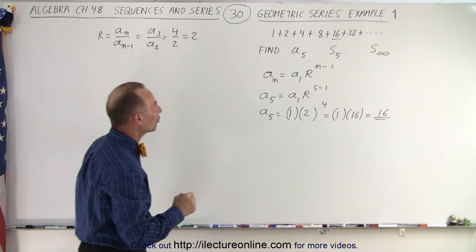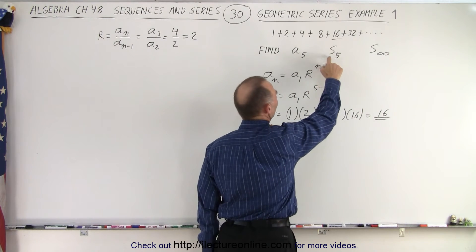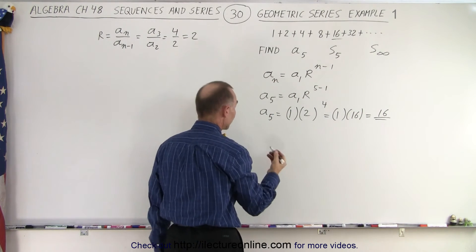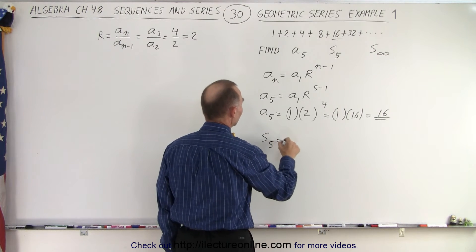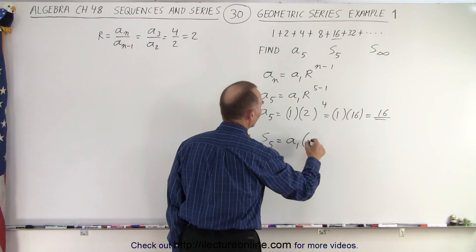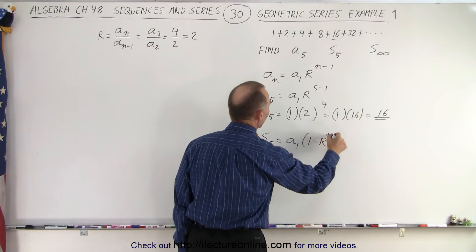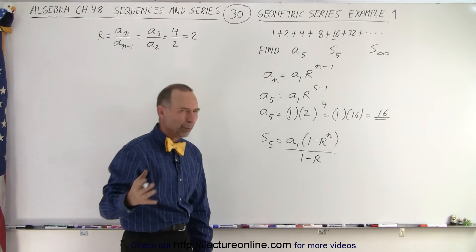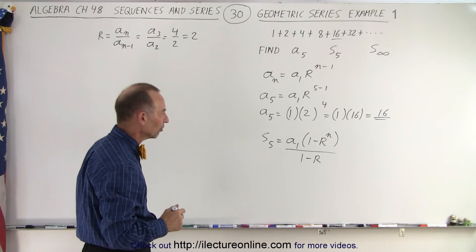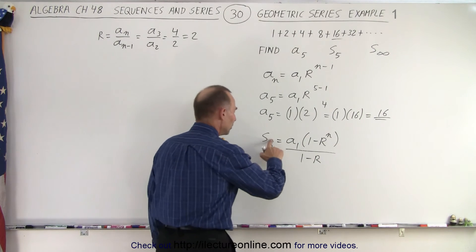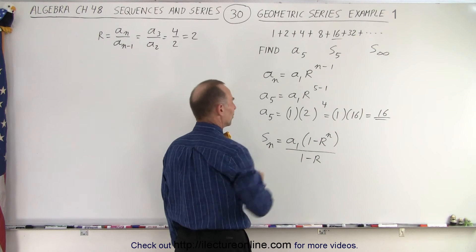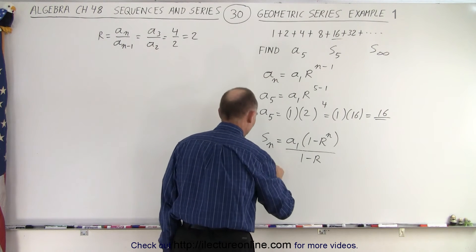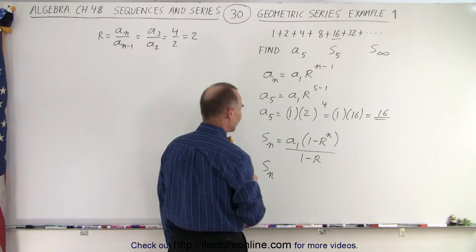Now the next thing we want to do is find the partial sum of the first five terms. We need to know the equation S sub N is equal to A sub 1 times 1 minus R to the N power divided by 1 minus R. You can see how important it is to remember these equations. For the sum of the first five numbers,